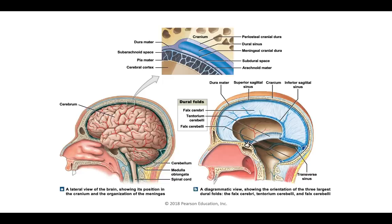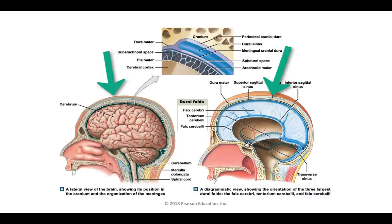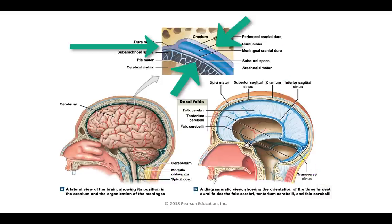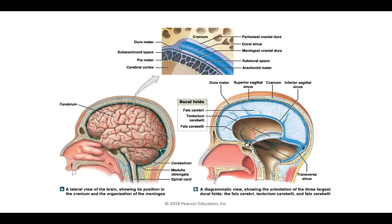The cranial meninges have the same three layers as the spinal meninges: the innermost layer is the pia mater, the middle layer is the arachnoid mater, and the outer layer is the dura mater. The dura mater folds into the longitudinal fissure and the cerebellar fissure, creating dural folds. Between the two layers of each fold is a space called the dural sinus. These dural venous sinuses drain venous blood to the veins of the neck.